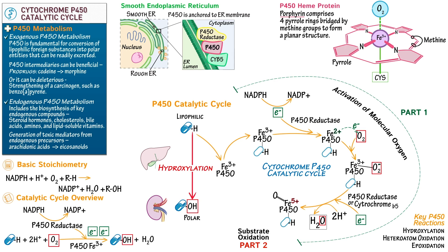From here, many different reactions can occur, but the most common is that through two separate steps, the oxygen is transferred to the carbon-hydrogen bond on the substrate — it's hydroxylated — and two electrons return to the ferryl iron so that it returns to its original ferric iron oxidation state, Fe³⁺. The drug then leaves the enzyme active site, now hydroxylated and in its polar state, ready to be renally excreted, and the P450 enzyme is ready for the next reaction.